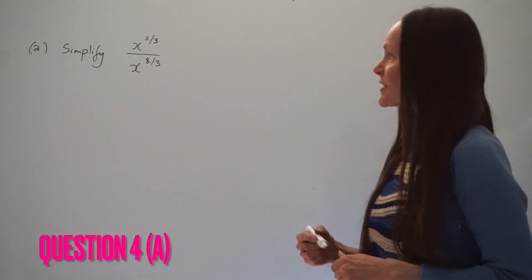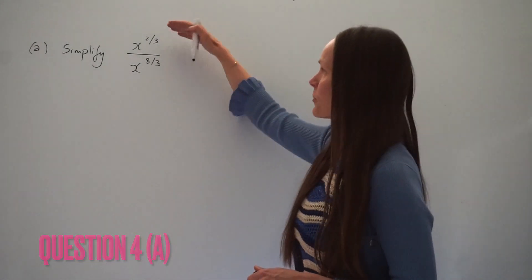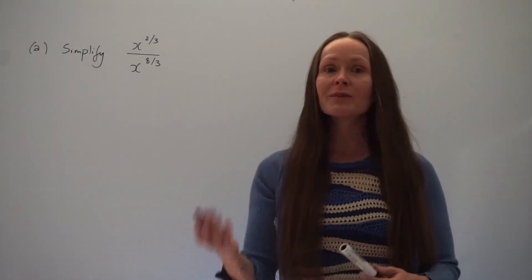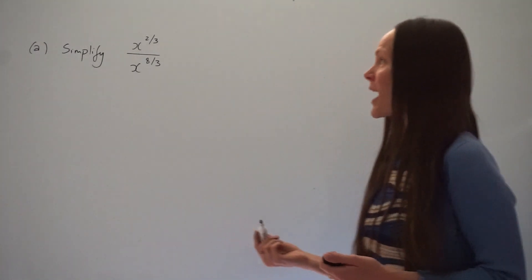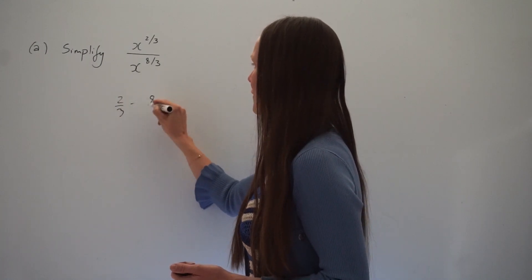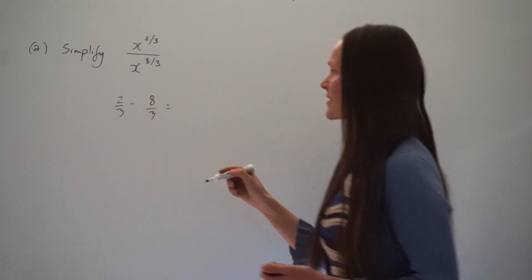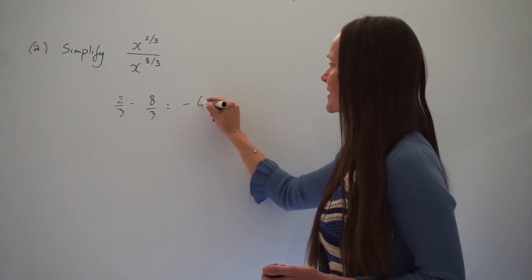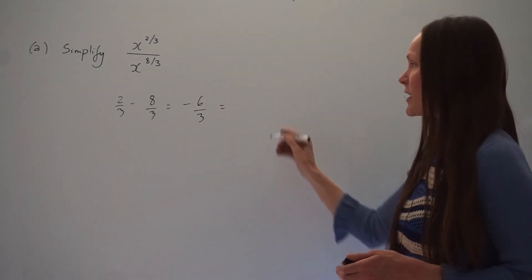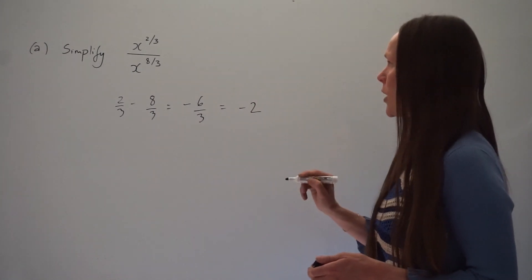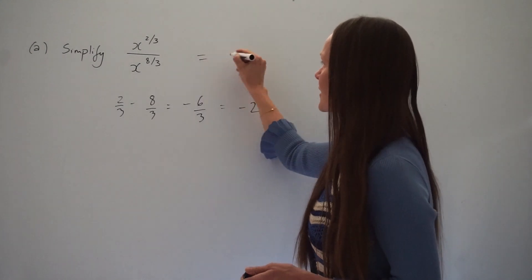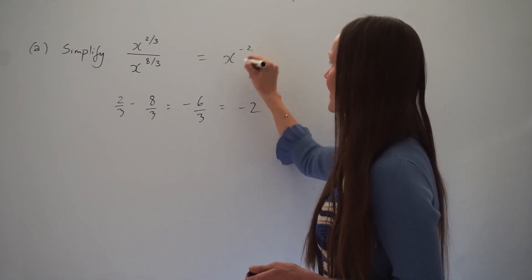In part A, simplify x to the power of 2 thirds divided by x to the power of 8 thirds. Remember, when you're dividing, you must subtract the powers. So 2 thirds minus 8 thirds gives negative 6 thirds, which is the same as negative 6 divided by 3, which is negative 2. So the answer is x to the power of negative 2.